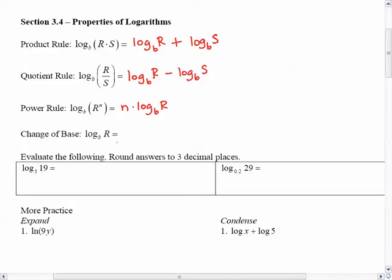And there is a change of base, which we won't be using all that often because your calculator has a fancy feature. But it tells us that if I have an expression like that, I can just take the common log of R, the common log of b, and divide them together, and I will get the right answer. I can also take the natural log of R and the natural log of b and divide them together, and I should get the right answer as well.